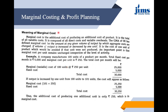Marginal cost is the additional cost of producing one additional unit. It is the total of all variable costs — composed of all direct costs and variable overheads. CIMA of UK defines marginal cost as the amount at any given volume of output by which aggregate costs are changed if the volume of output is increased or decreased by one unit. It is the cost of one unit of product which would be avoided if that unit were not produced. An important point: per unit marginal cost remains unchanged irrespective of the level of activity.